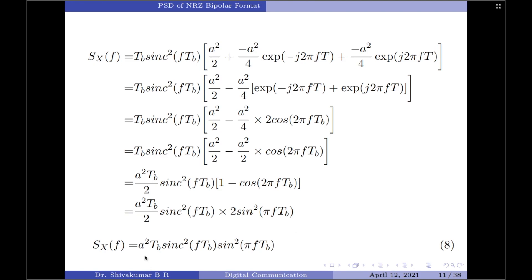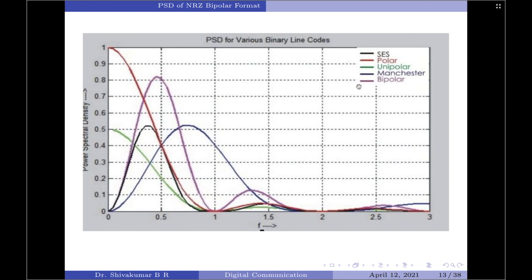Let us have a look at the normalized form of the PSD. The bipolar format is shown as the blue-colored waveform — this is the normalized form of the power spectral density of the bipolar format. With that, we come to the end of this discussion on the derivation for the power spectral density of NRZ bipolar format. If you like this video, kindly press the like button and subscribe to my channel for more videos on digital communication. Thank you for watching. Have a good day.